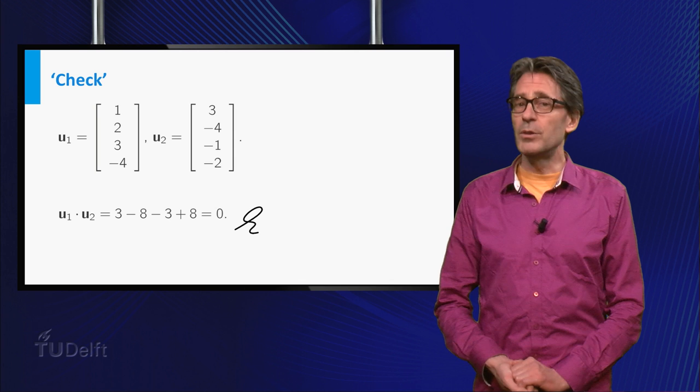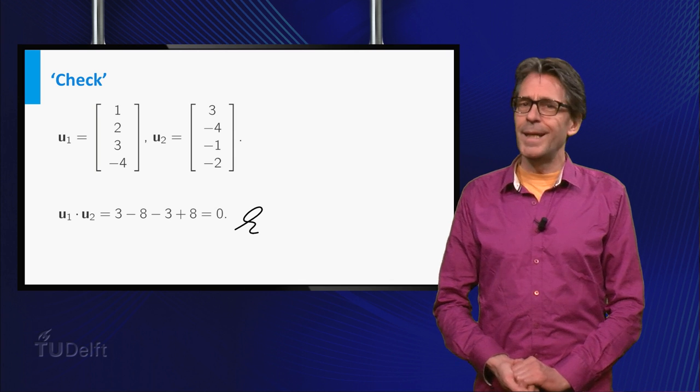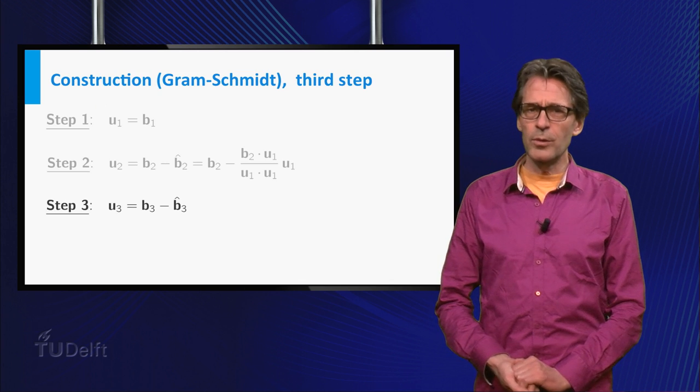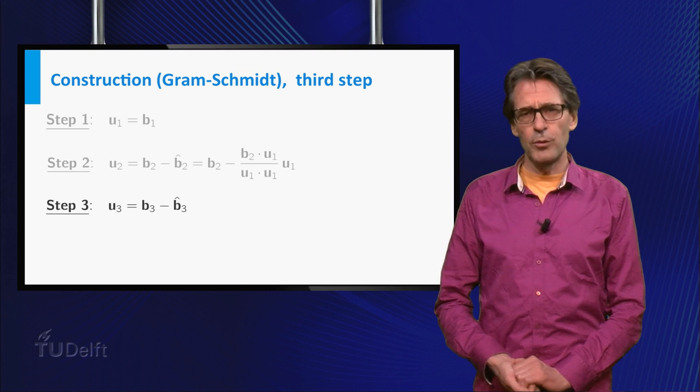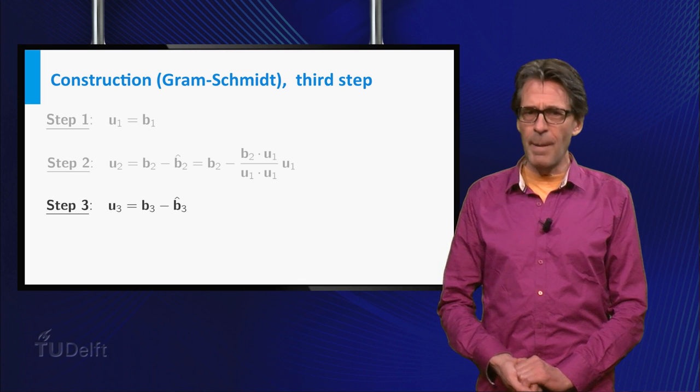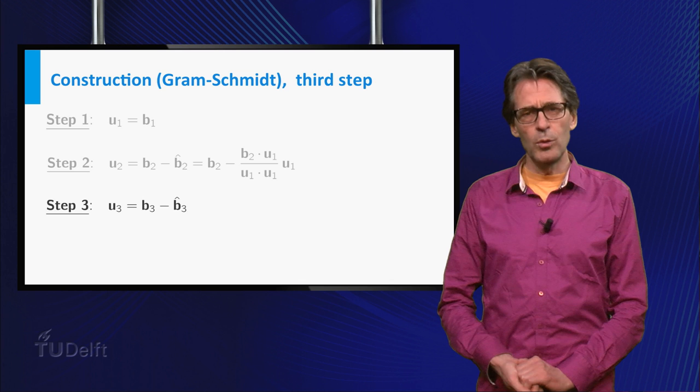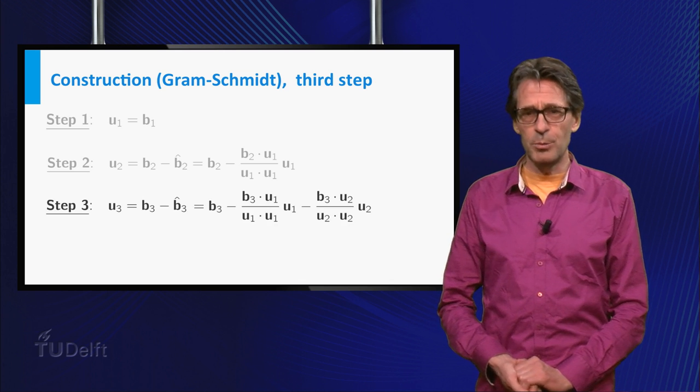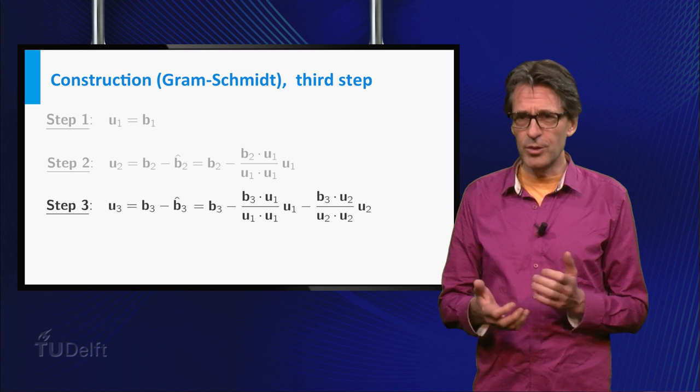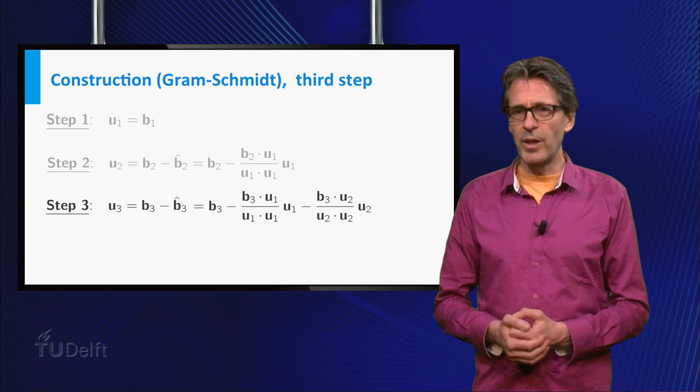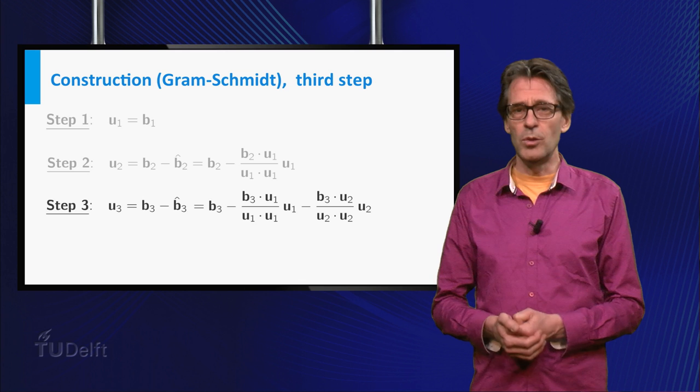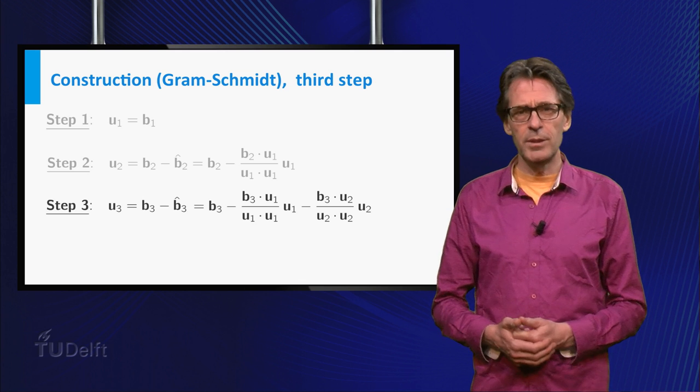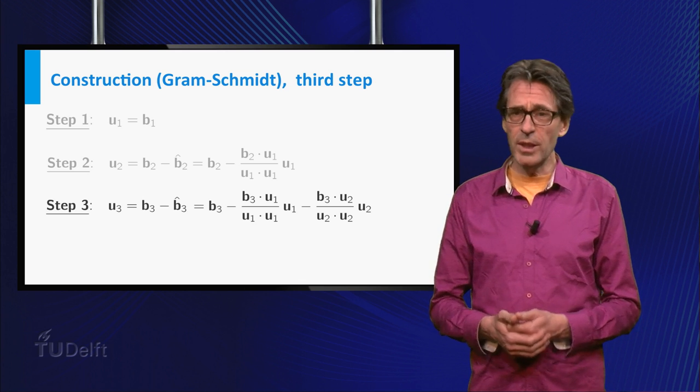The third step is the crucial step. Again, the new orthogonal vector u3 is the difference of the third basis vector b3 minus its projection onto the span of its predecessors. To calculate this projection, the ingenious trick is to use the already found orthogonal basis u1, u2, since for this basis we may use the ready-made projection formula.